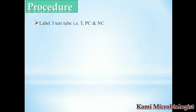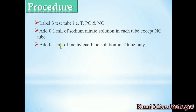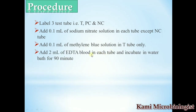For the procedure, first take three clean test tubes and label them: the first tube T (test), the second PC (positive control), and the third NC (negative control). Then add 100 microliters (0.1 ml) of sodium nitrate solution into each tube except the negative control tube. Next, add 0.1 ml (100 microliters) of methylene blue solution into the T tube only, not into the other two tubes.